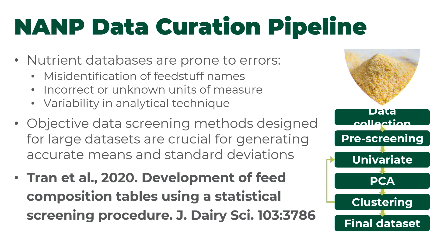The process involves collecting a large amount of data, pre-screening it, doing a univariate analysis to identify outliers, and performing a principal components analysis. In the case of dairy, also doing a clustering analysis to ultimately produce the final dataset. It's a multi-step process that is objective and described, such that we can understand how clean that database is going to be.